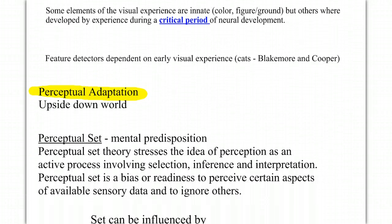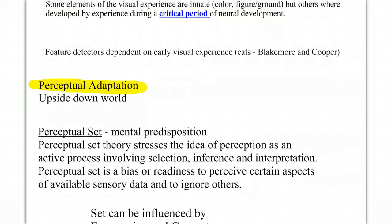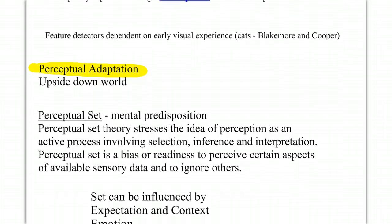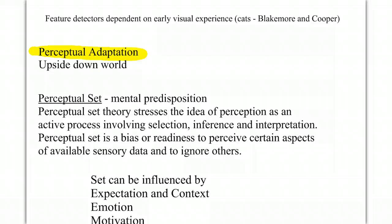One of the more interesting concepts that we're going to learn about in this part of the chapter is the concept of a perceptual set, or a mental predisposition. What do you already know? What do you expect to happen? These things greatly affect how we perceive an event. And I want you to think of any time where you and another person experience the exact same thing, but your perception of it was very different. It's all based on what your past experience is.